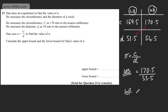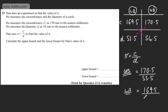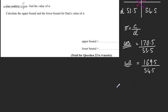If we look at the lower bound, we want the value of the fraction to be as small as possible. So we take the lower bound of the circumference and divide that by the upper bound of the diameter. So that gives us 169.5 divided by 54.5.